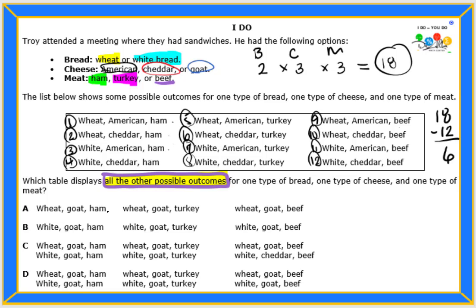Letter A has one, two, three outcomes. Letter B has three outcomes. Letter C has one, two, three, four, five, six. And letter D has one, two, three, four, five, six. So we know that A and B do not have enough outcomes. So it's either C or D. According to the fundamental counting principle, we are missing six outcomes. But now we need to make sure that we get the correct outcomes.